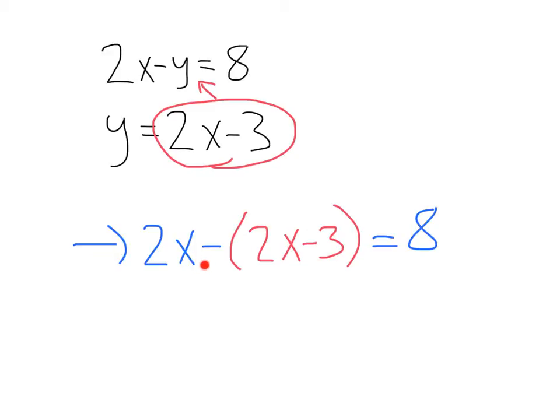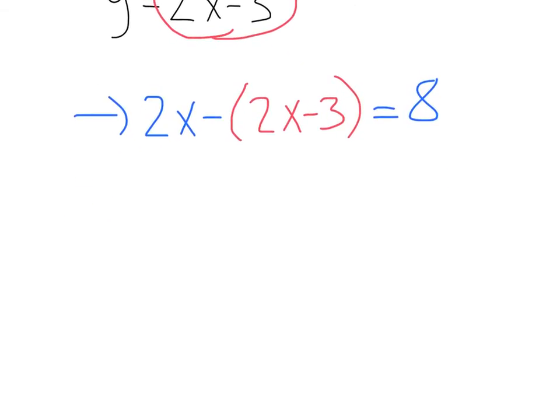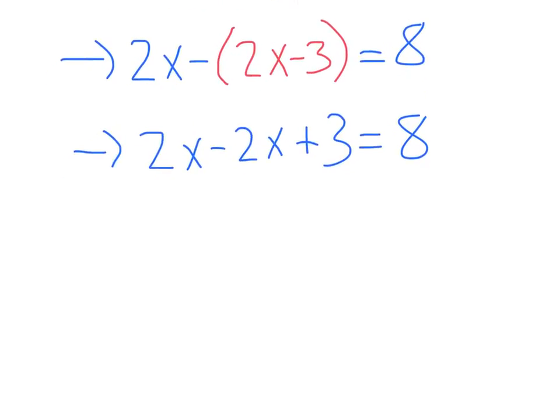That's going to give us 2x minus, plugging that in for y, 2x minus 3 equals 8. Let's go ahead and simplify this out. Here we've got 2x minus 2x plus 3 equals 8. Remember, this negative will distribute negative 2x plus 3. Let's simplify from there.